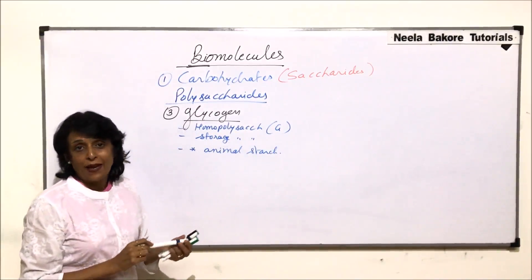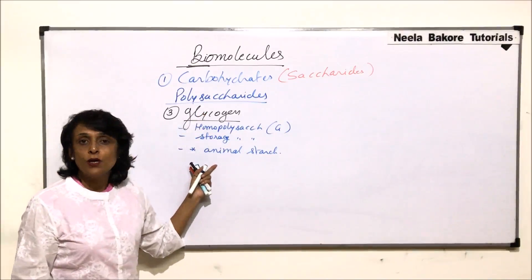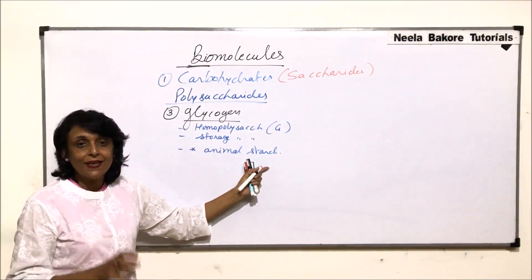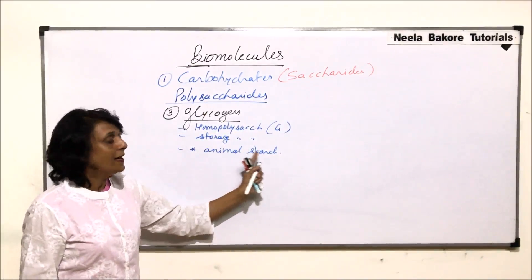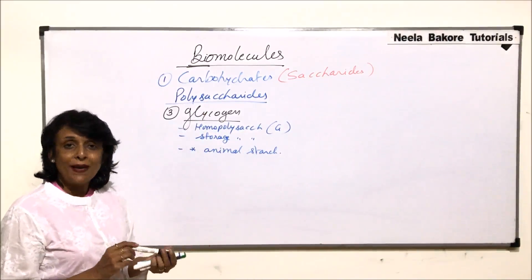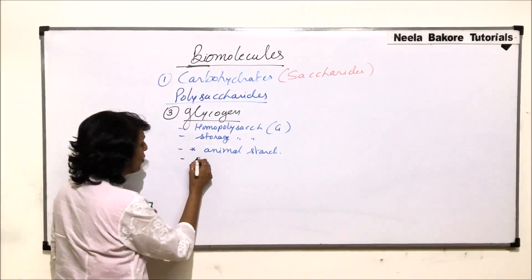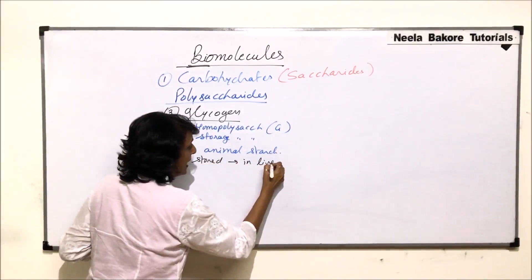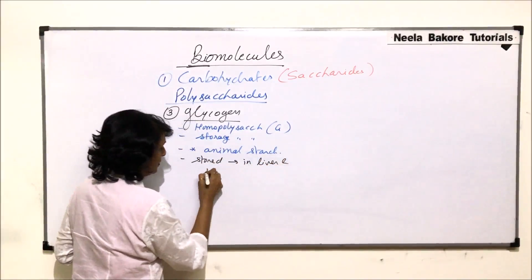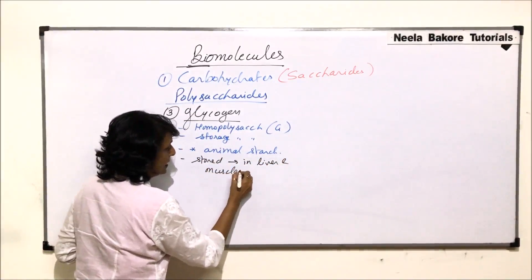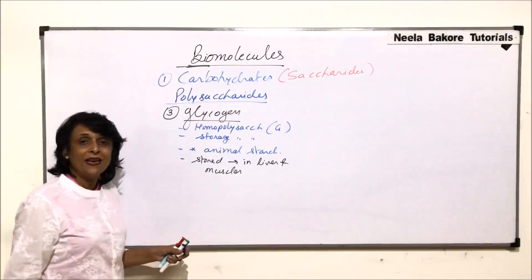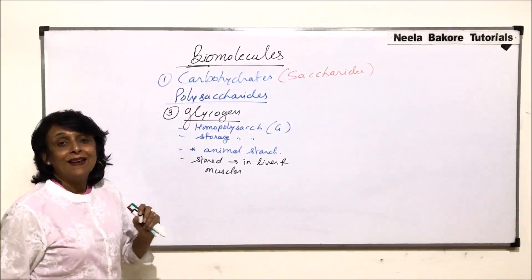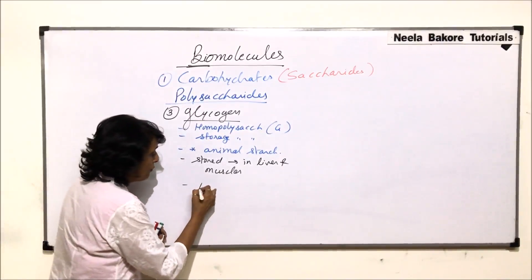Because it is stored in animals, glycogen is also known as animal starch. Starch is the storage carbohydrate in plants, and glycogen is the storage carbohydrate in animals. The two places where glycogen is stored are the liver and muscles.